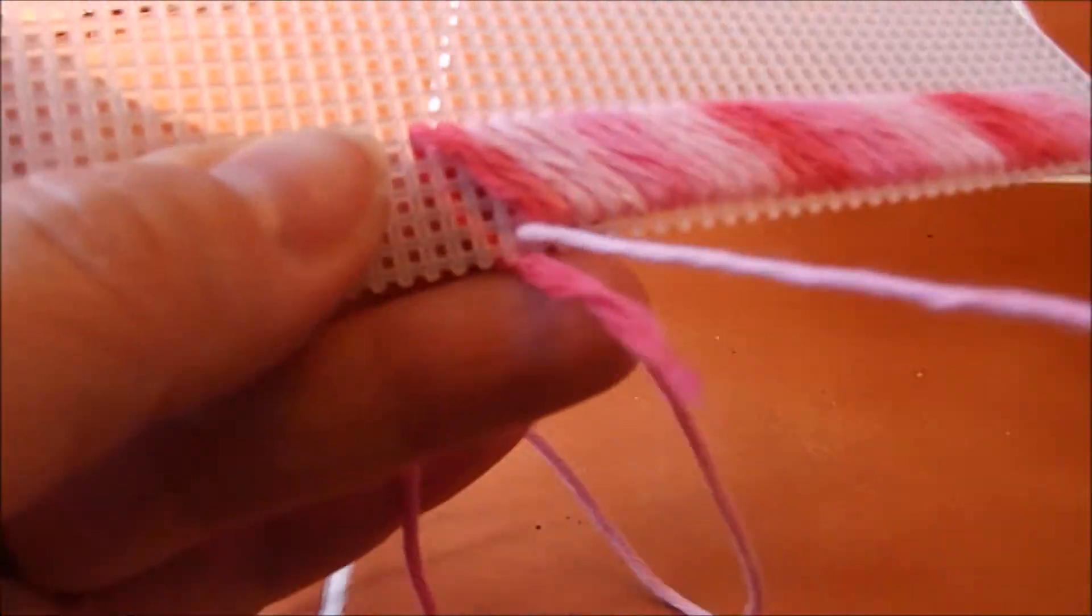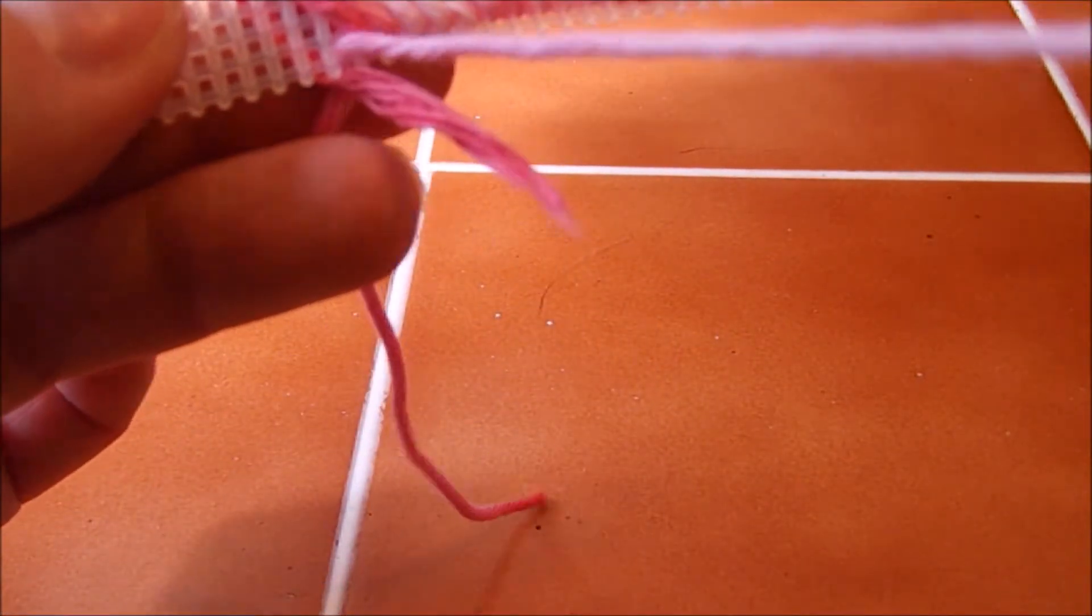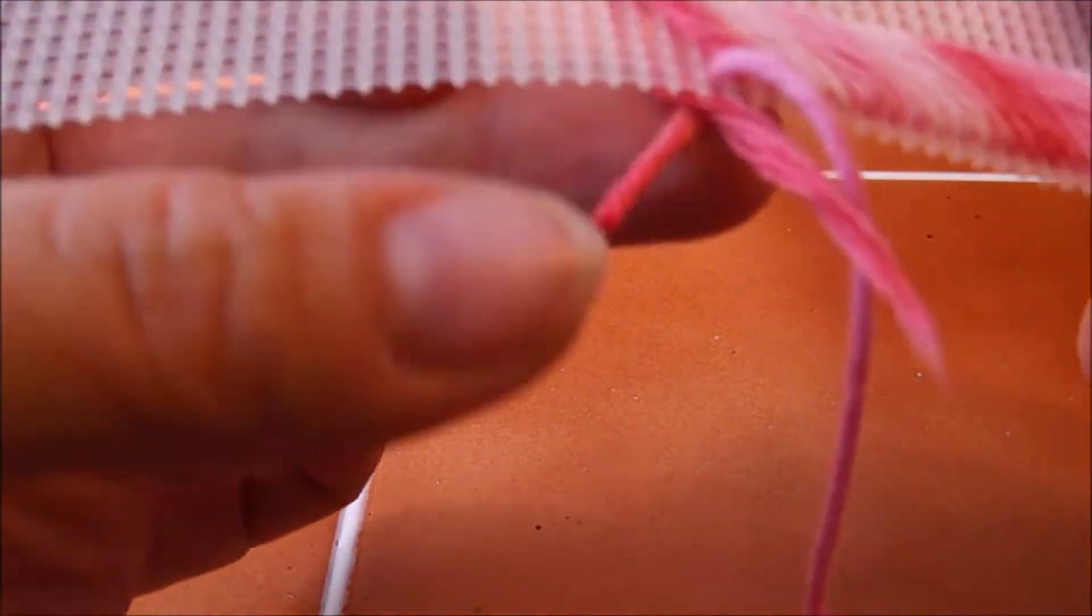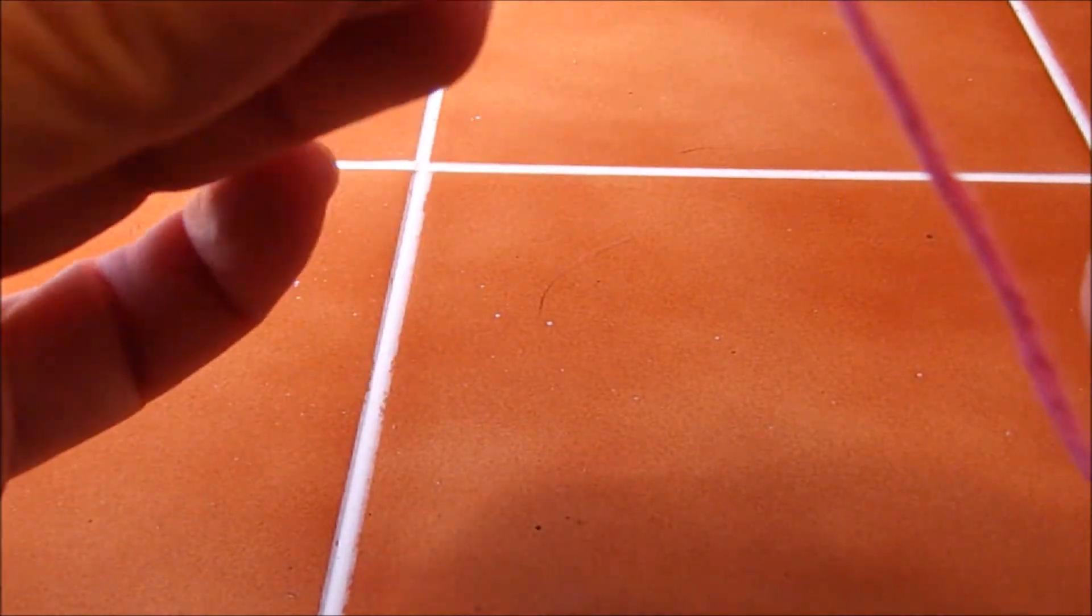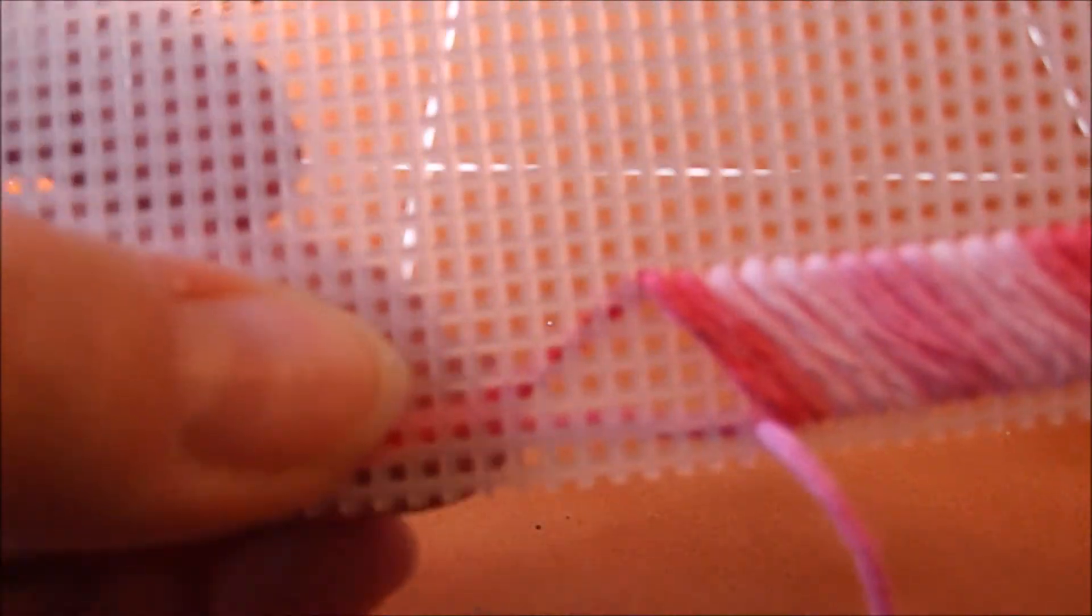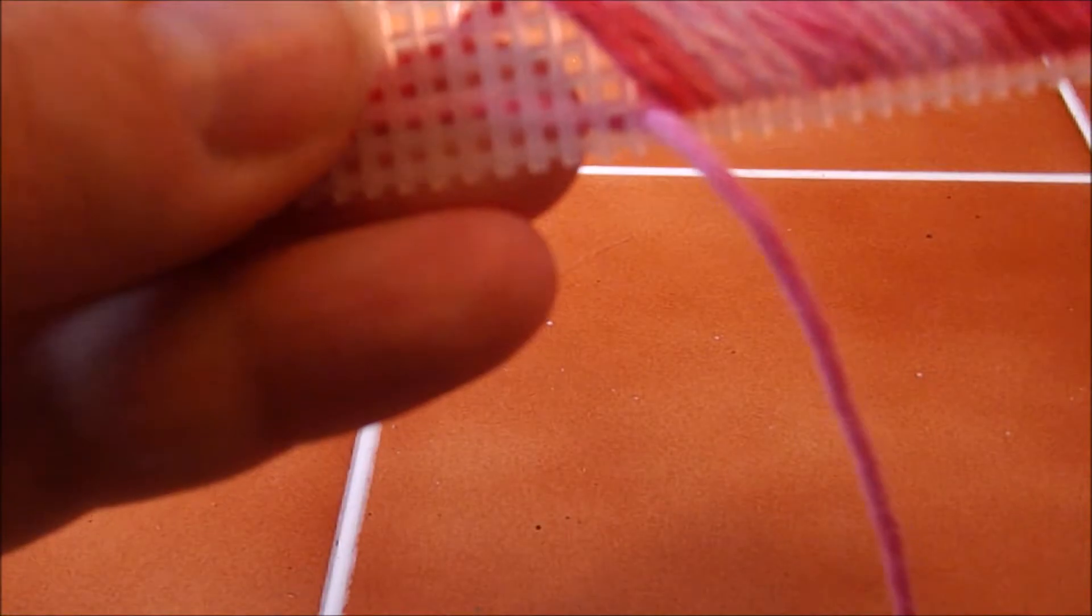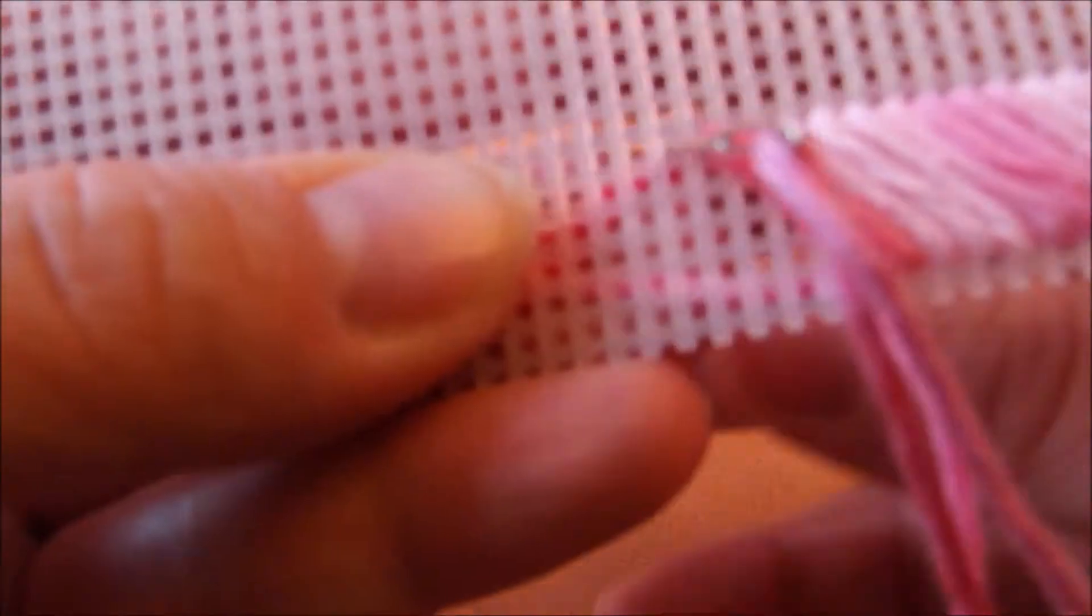Pull it through just like you did the very first time we did this. And leave a tail on there as well. So take your two tails. Hold them along the back of the canvas like that. And then just start wrapping over them again.